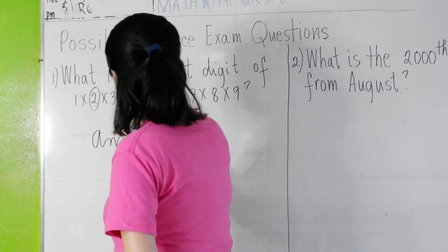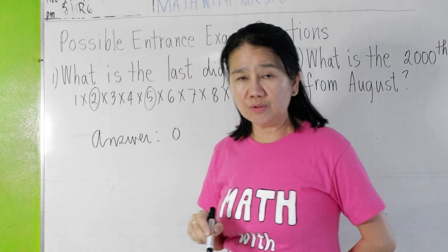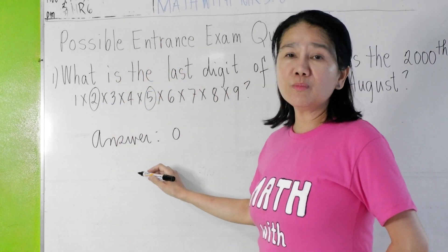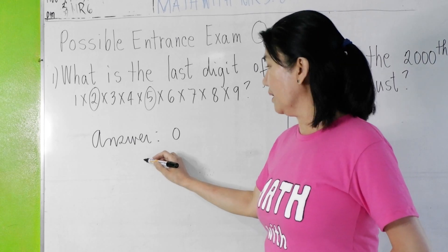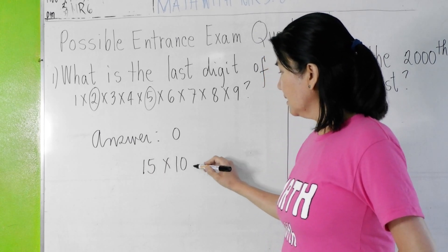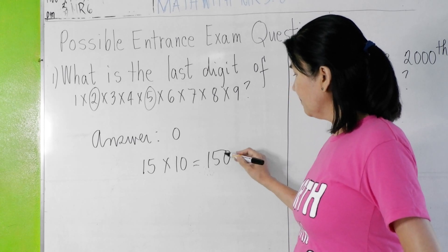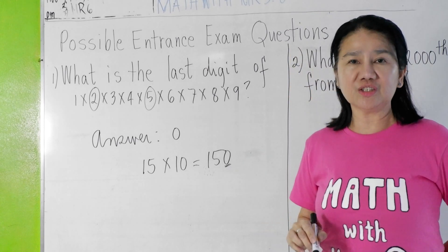Remember, when you multiply a 2 and a 5, it gives you a 10. And whenever you multiply a 10 to any number like 15 times 10 is equal to 150, it gives you a last digit of 0.